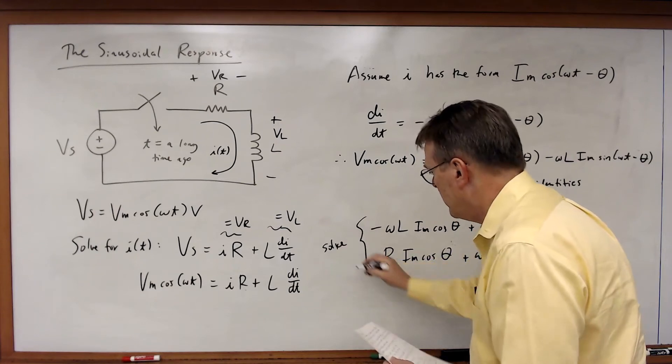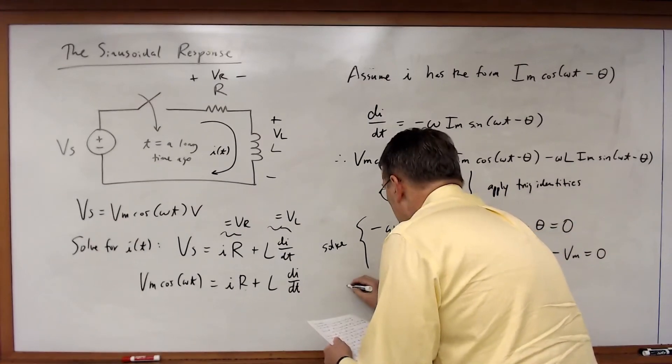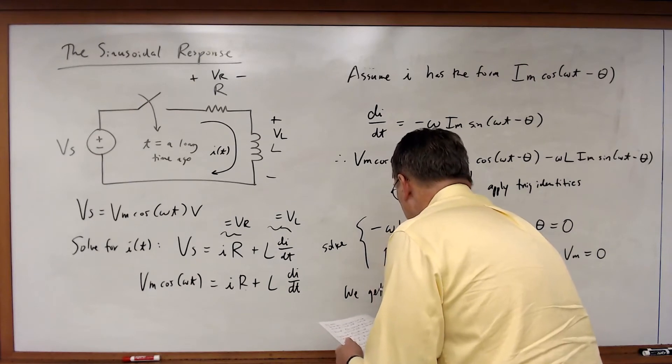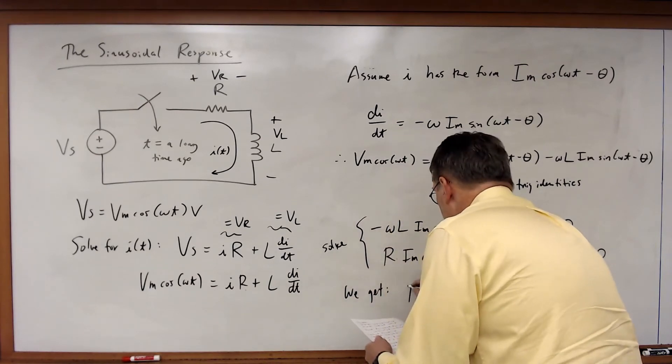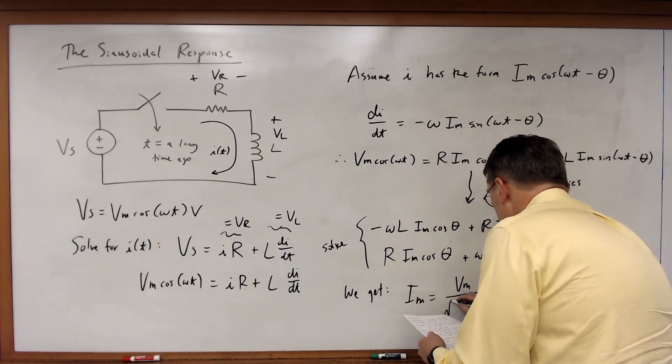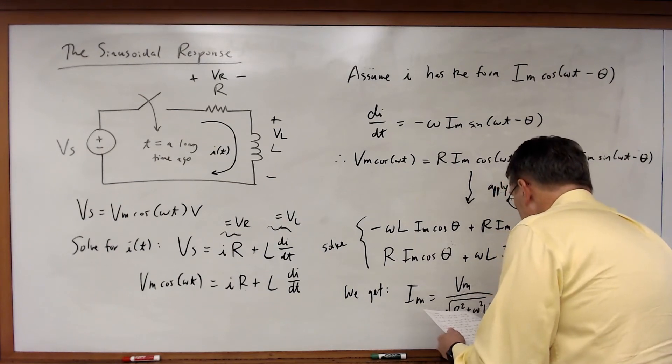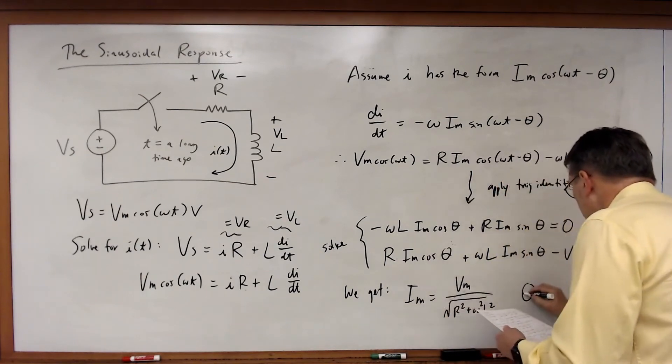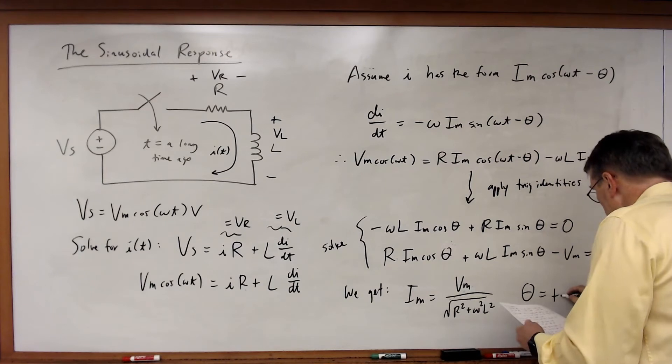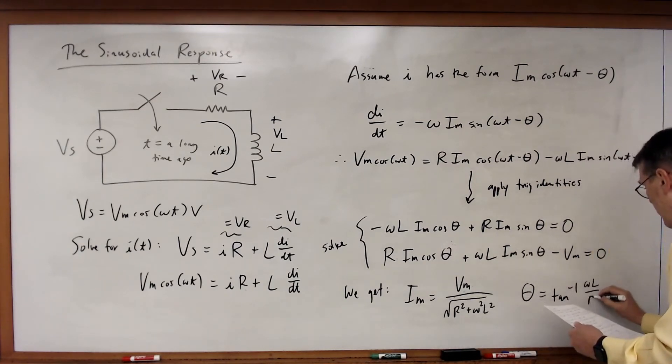And what we will get is that I M will be equal to V M divided by the square root of R squared plus omega squared L squared. And theta will be equal to the inverse tangent of omega L over R.